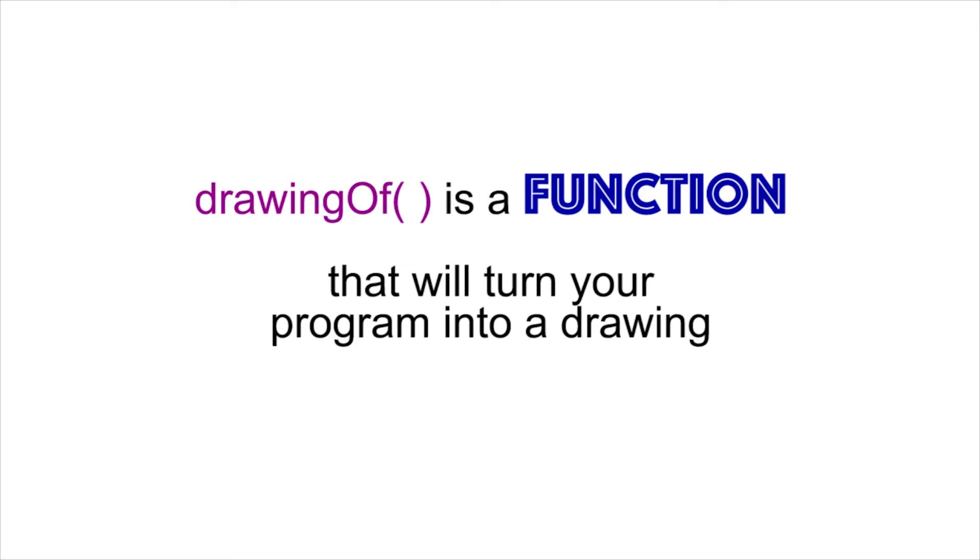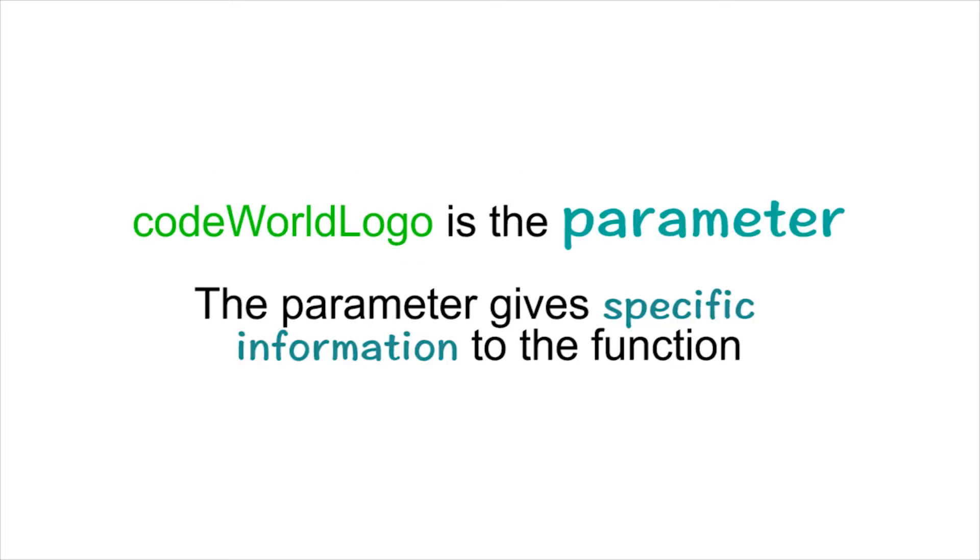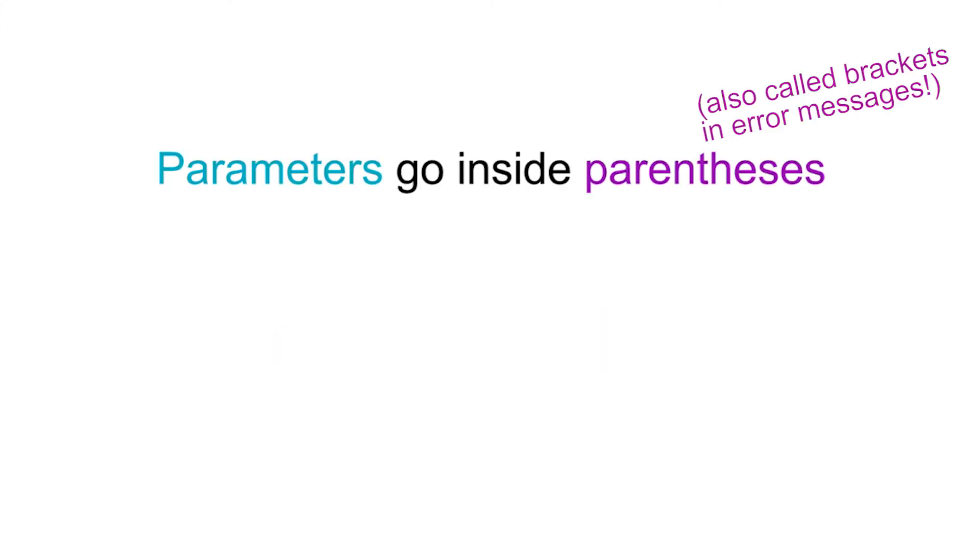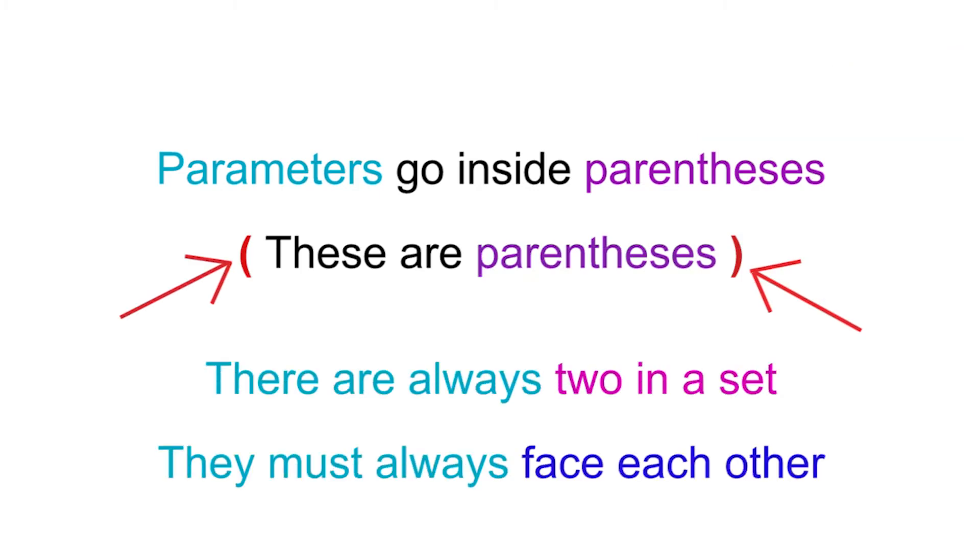Think of functions like they're machines. You put something into the function machine and something else comes out. You wrote code world logo into the machine and the drawing of the code world logo came out. The thing that you put into the machine, inside the parentheses, is called a parameter. In this example, code world logo is the parameter. The parameter gives specific information to the function. Parameters go inside parentheses. These red punctuation marks are parentheses. There are always two in a set and they must always face each other.